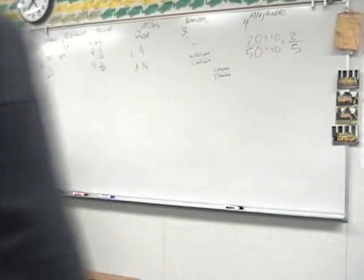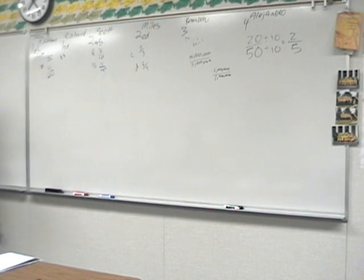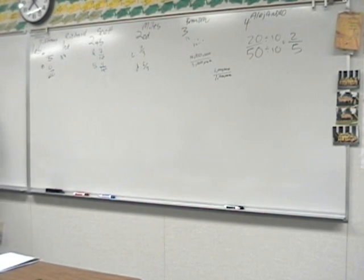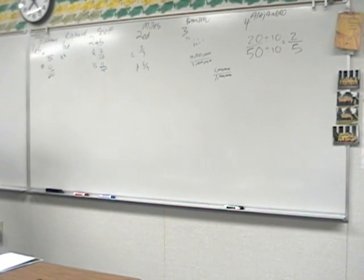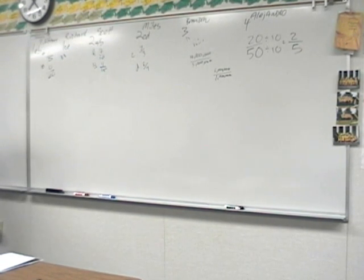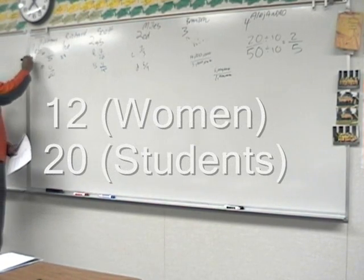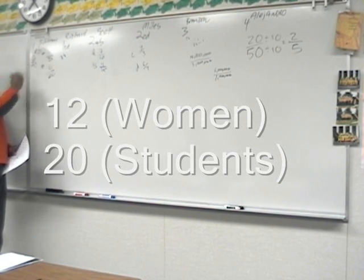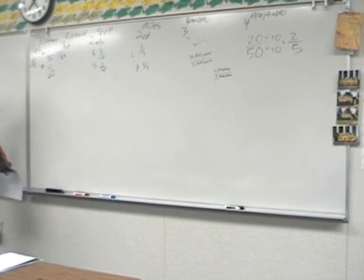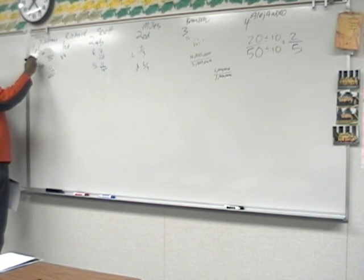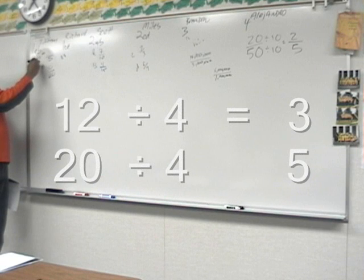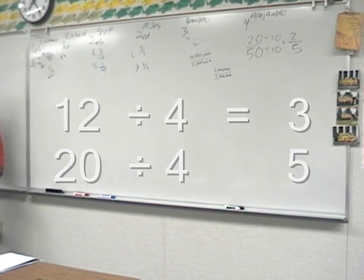Thank you, Brandon. Remember 1A: a GED class has 20 students and 12 of the students are women. 1A says, what is the ratio of the number of women to the total number of students? So that's going to be 12 to 20, and you reduce that — take out 4 — and you get 3 fifths.